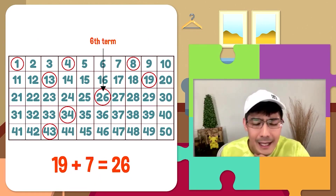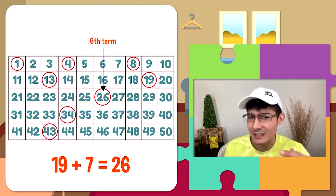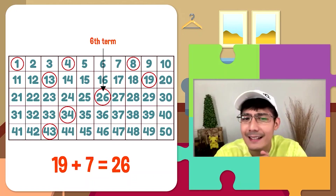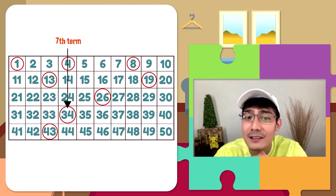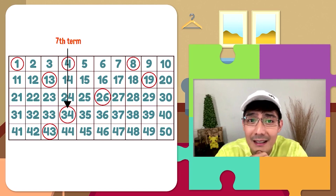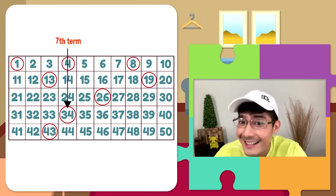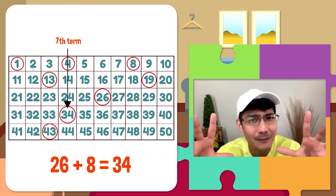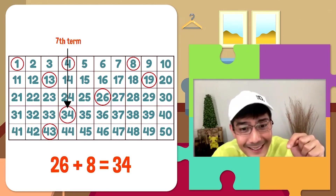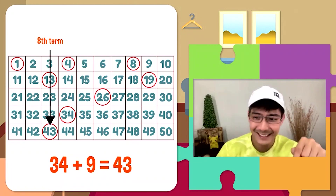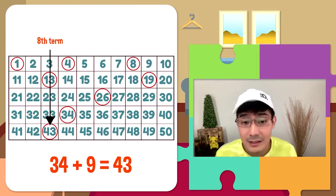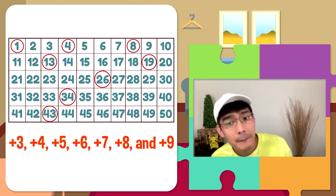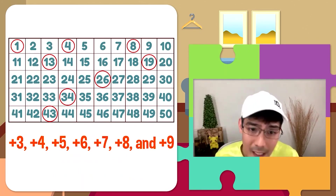Dalawang patterns na lang hinarap natin to finish the challenge dito sa ating escape room. Ano yung i-add natin sa ating 6th term para makuha ang 7th term na 34? We add 8. At pang huli, we add 9 sa ating 8th term to get 43. Ang pattern sa number sequence ito ay plus 3, plus 4, plus 5, plus 6, plus 7, plus 8, plus 9.